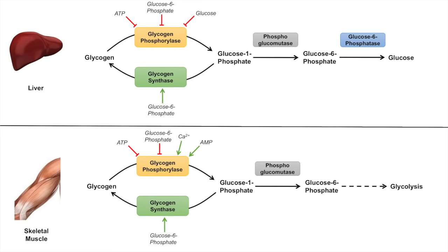3 ATP are generated for every glucose from glycogen as opposed to non-glycogen glucose. The reason is that when you process a residue of glycogen, you end up getting glucose-6-phosphate, which is already phosphorylated. In a normal cell, when glucose is brought in it must be phosphorylated into glucose-6-phosphate, costing 1 ATP. With glycogen, this is already done — the ATP was invested previously. So when you bring glucose out of glycogen storage, it is already glucose-6-phosphate and does not need to be phosphorylated, saving the cell 1 ATP. That's why we get 3 ATP instead of 2 ATP.